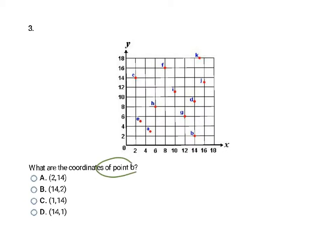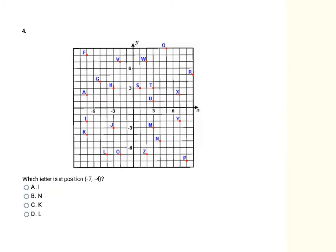Here it's the other way around — they tell us which point to look at. It asks for the coordinates of point B. Coordinates are always x then y. On my x-axis, B is at 14, and on my y-axis B is at 2. So the coordinate is 14, 2, which is choice B. The next problem gives coordinates negative 7, negative 4 — always x then y. On the x-axis I go to negative 7, and the y-coordinate is negative 4, so I go down 4 — 1, 2, 3, 4 — landing on point K. So point K is my final answer, which is choice C.